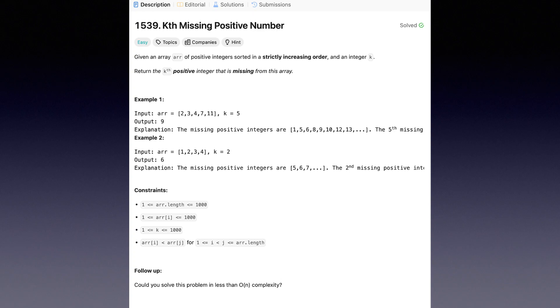Hi there, I hope you are doing well. Today we'll tackle the challenge of finding the kth missing positive integer. The question is stated as: given an array of positive integers sorted in a strictly increasing order and an integer k, return the kth positive integer that is missing from this array. They have given us a couple of examples and we will review those in a bit.